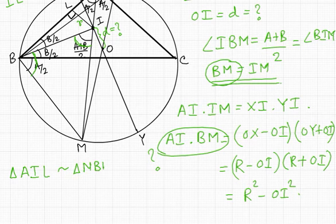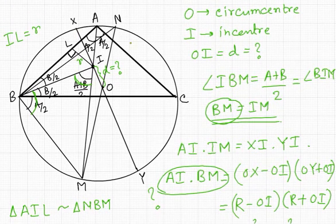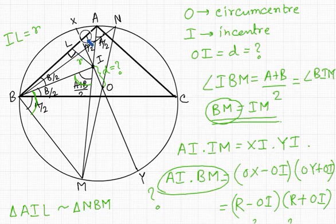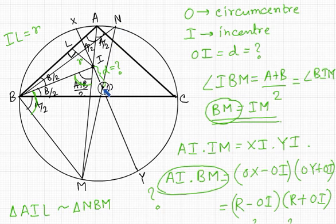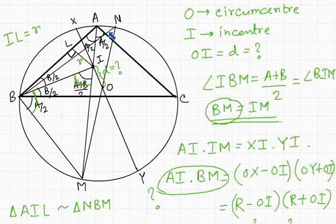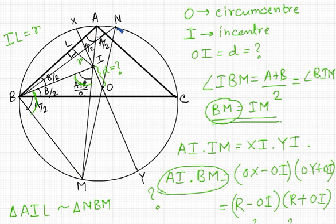Triangle AIL is similar to triangle NBM. In triangle AIL, the angle at L is 90° and the angle at A is A/2. In triangle NBM, since NM is a diameter of the circle, it subtends 90° at the circumference, so angle NBM = 90°. The angle at N equals A/2 because both angles are subtended by the same segment. Thus both triangles have a 90° angle and an angle of A/2, making them similar.